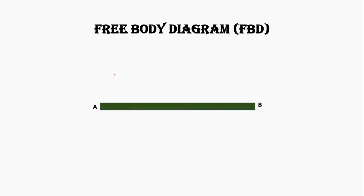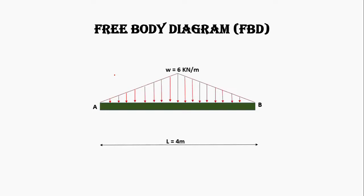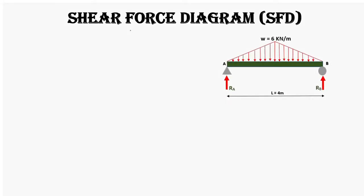Let's draw a free body diagram. Here you can see we have a beam AB of 4 meter length with a triangular load of 6 kilonewton per meter and support reactions of 6 kilonewtons on each side.